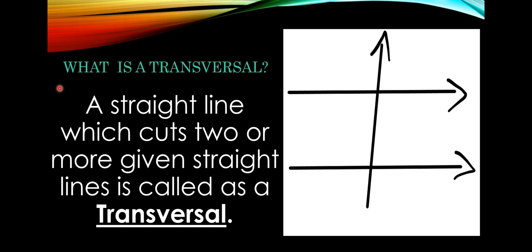I will explain what a transversal is. The definition: a straight line which cuts two or more straight lines is called a transversal. I will explain this with the help of a diagram. Here there are two straight lines, and one straight line is intersecting both of them — at this point and at this point — hence this line is called a transversal.